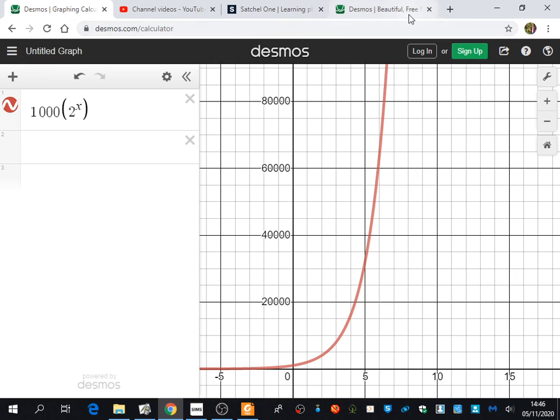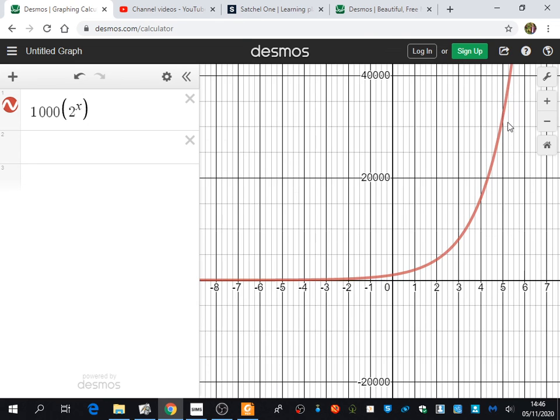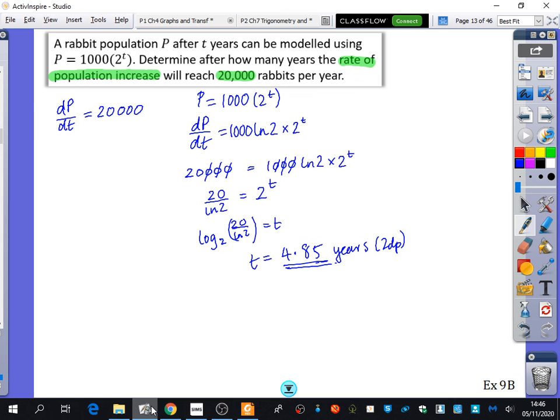And it just goes up exponentially fast. This is the kind of scenario we're trying to avoid in the pandemic. Which is why, even at the beginning, when something doesn't look like that much of a big deal, it doesn't look like much of an increase, it's very quick for things to start getting pretty extreme. And that's really the message that we're living through at the moment. So, that's us done. Ready for exercise 9a and 9b.